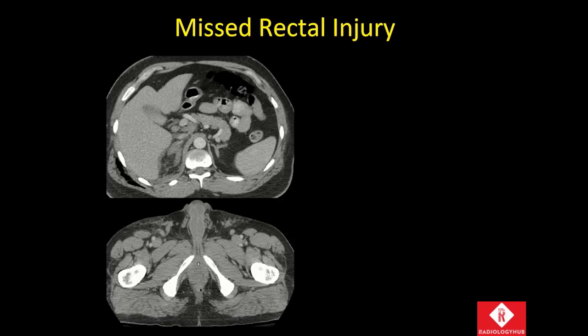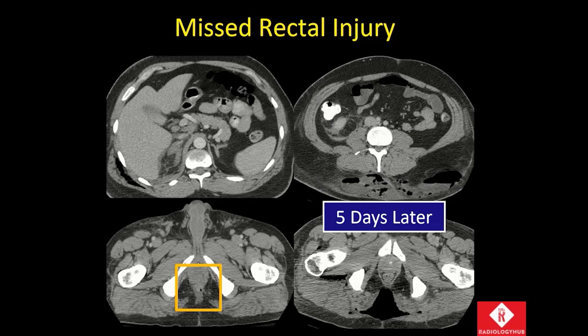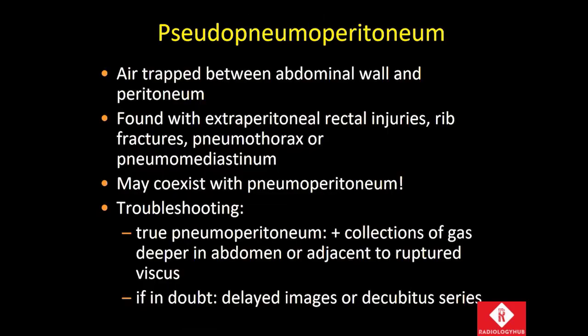This is one patient with a missed rectal injury. Notice there is an adrenal hematoma and a small, tiny gas bubble outside of the posterior wall of the rectum. This patient was admitted, and five days later was having fever and toxicity. We repeated the CT and there's a massive gas collection in the soft tissues extending to the buttocks. We confirmed with sigmoidoscopy that there was a rectal tear that was subsequently repaired.